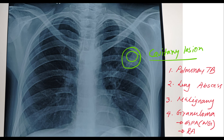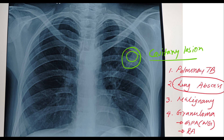Actually, in this patient, this cavitary lesion is due to lung abscess. Clinically, this patient was presented with high-grade fever for five to seven days, with left-sided chest pain and also chills and rigor. And radiologically, look at the lesion — the wall is very thick and inhomogeneous, and there is a definitive radiolucent area in the middle of the lesion.